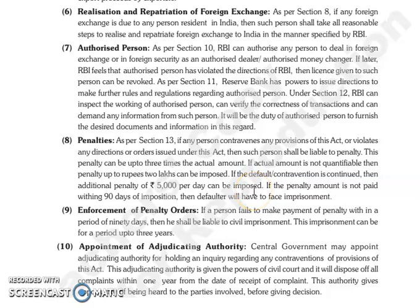Good morning everyone. Continuing with our next point — authorized person. As per Section 10, RBI authorized कर सकती है किसी भी person को deal करने के लिए foreign exchange में या फिर foreign security में as an authorized dealer या authorized money changer. अगर आगे जाके RBI feel करती है कि जो authorized person है उसने violate की है जो directions थे RBI के, तो जो license उस person को दिया गया था उसे revoke भी किया जा सकता है.